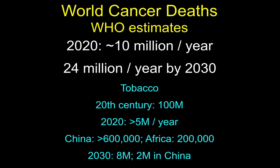The World Health Organization estimates that tobacco usage in the 20th century killed about 100 million people. In 2020, it's going to kill about 5 million people — in China about 600,000 and in Africa about 200,000 a year. By 2030, global deaths from tobacco usage will be about 8 million, and 2 million of those will be in China.